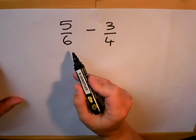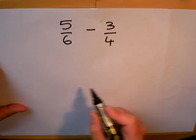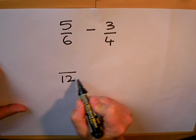The first number that comes in the six times table and in the four times table is 12, so I'm going to turn them both into twelfths.